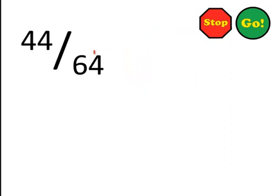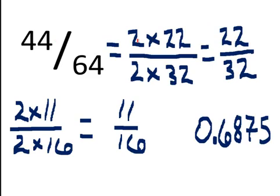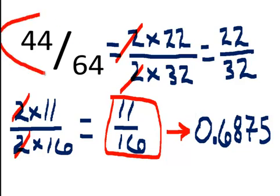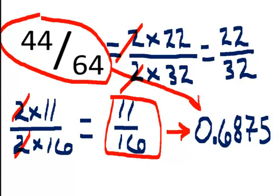44 over 64 — click on the stop sign. Let's see how you did. Well, 44 can be factored as 2 times 22 and 64 can be factored as 2 times 32. We can cancel this 2 with this 2. Then we have an even number and an even number. 22 can be factored as 2 times 11 and 32 can be factored as 2 times 16. This 2 cancels with that 2 and leaves us with 11 sixteenths. So 11 sixteenths, if we did the long division, would give the same decimal equivalent as 44 over 64.